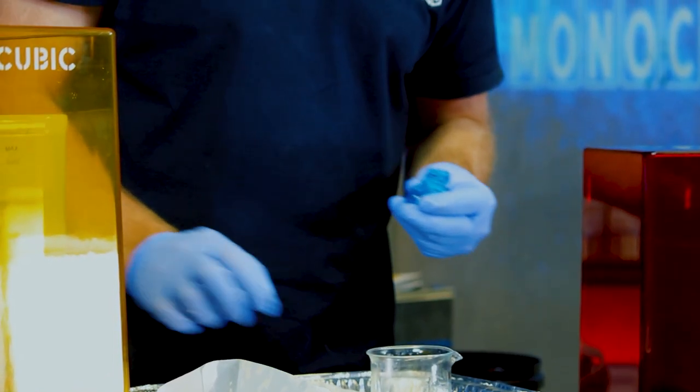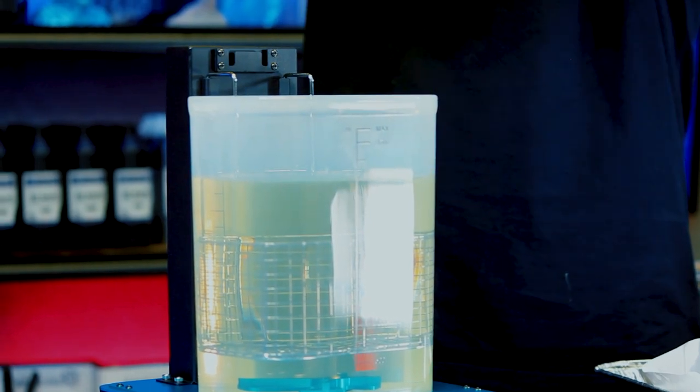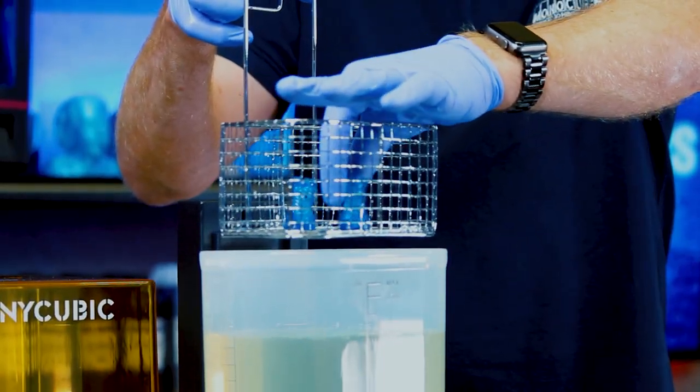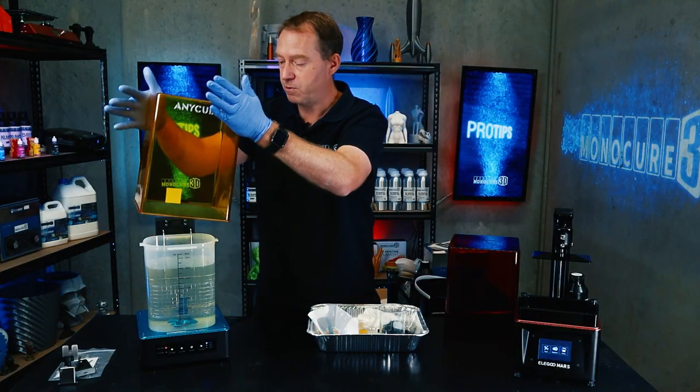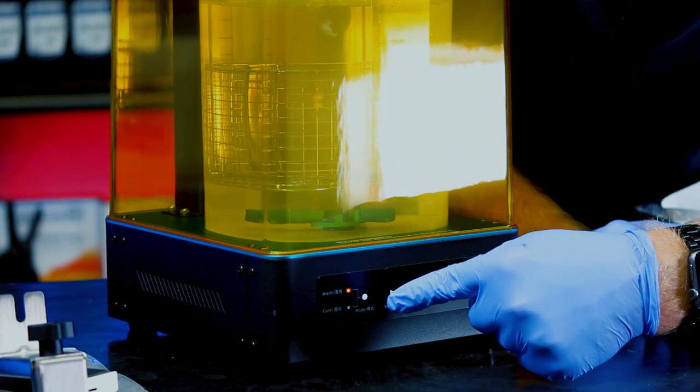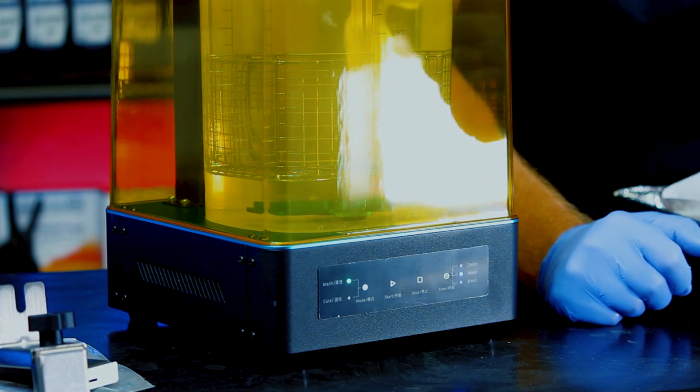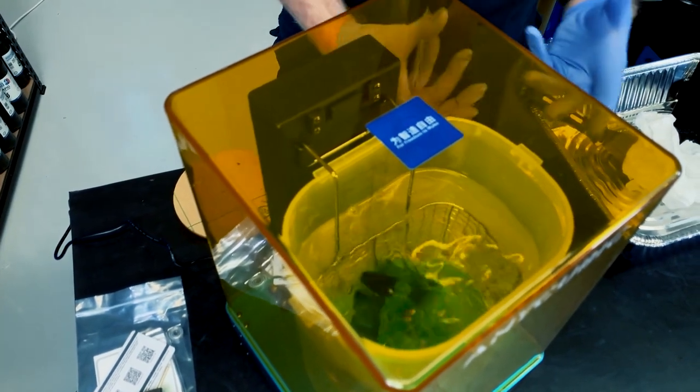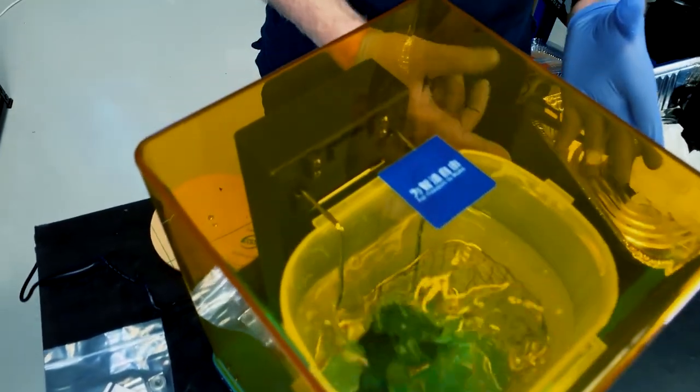The next thing we're going to do is we need to put these into the washer curer. First thing we need to do is lift the lid off. We can lift out the basket and we can put the Rooks in there. And we lower the basket. We pop it into place. We put the lid back on. Remember, this will not work without the lid. We check that it's on wash, not cure. We check the timer. We'll put it on four minutes. We can hit start. And these Rooks are pretty light so they will start probably spinning around a bit. But it's very gentle. I don't think it's going to be damaging. And that's really doing a good job of cleaning the resin off.